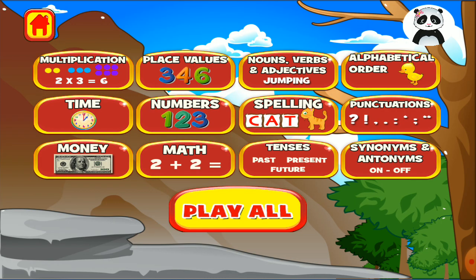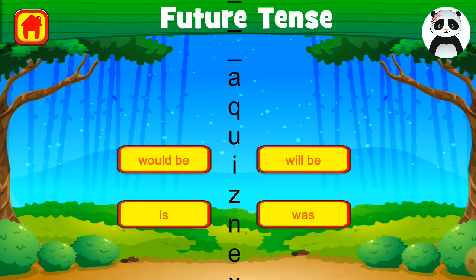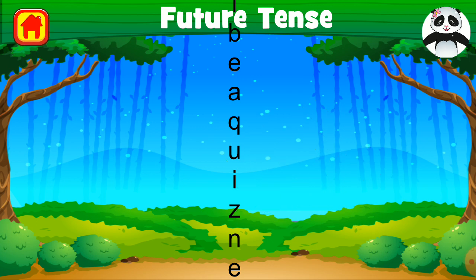Now we are going to solve the test of tenses. Choose the word that makes this sentence in future tense. Will be — fantastic.